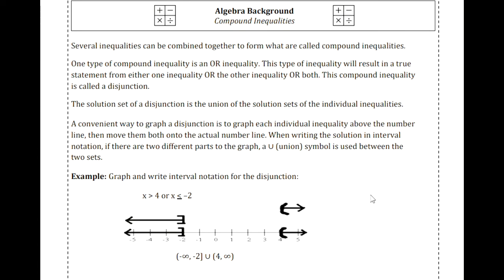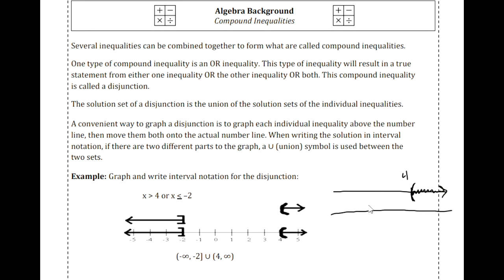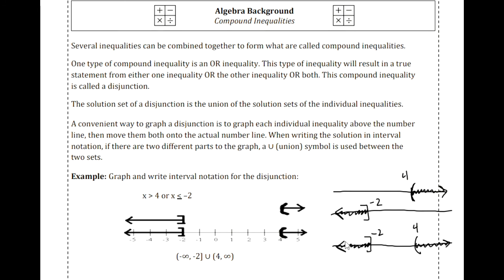In this example, we have x greater than 4 or x less than or equal to negative 2. The first inequality gives us all the x that are greater than 4, and the second inequality gives us all the x that are less than or equal to negative 2. The 'or' indicates that we're unioning the two sets together, so anything in one set or in the other will be in the final set. We take the two graphs and combine them into one graph.